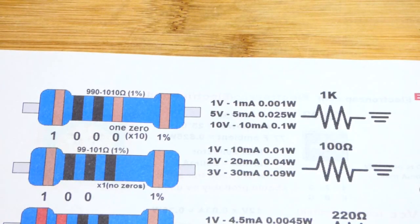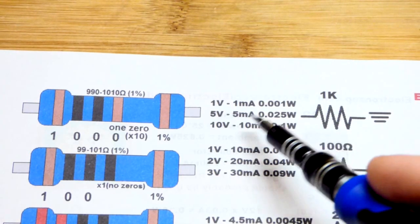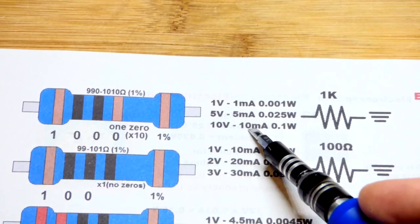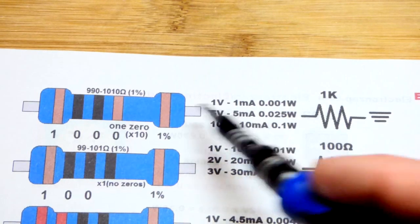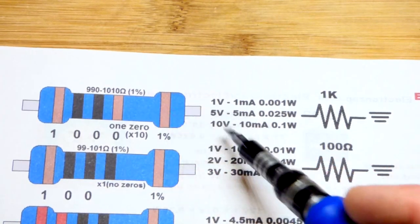So either you need a higher wattage resistor to get more current or you can put resistors in parallel and stuff. There's a number of options, but we're just going to keep this simple for this video looking at one resistor.